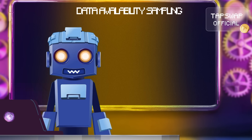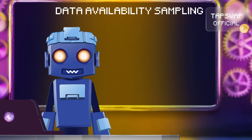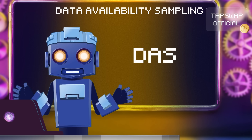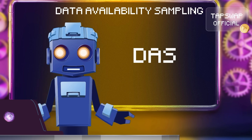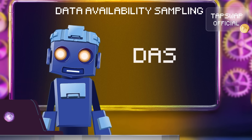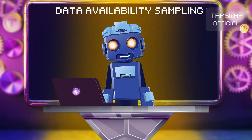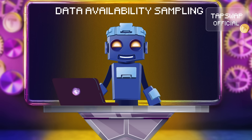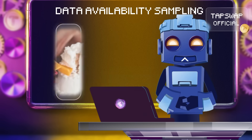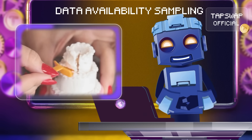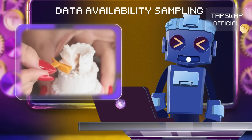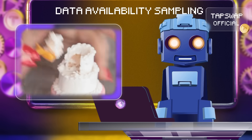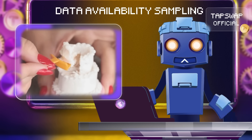Next, we've got Data Availability Sampling. This method is like taking random samples of data chunks, so you don't have to download the whole dataset. By sampling small parts, nodes can still verify the data without being overwhelmed by the entire dataset.